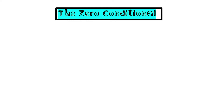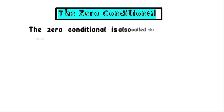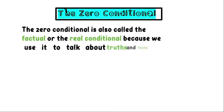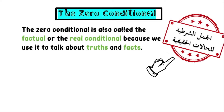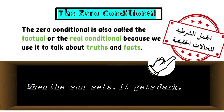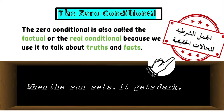The first condition is the zero conditional, also called the factual or real conditional, because we use it to talk about truths and facts. For example, when the sun sets, it gets dark. This is a fact in the conditional, so this is the zero conditional.